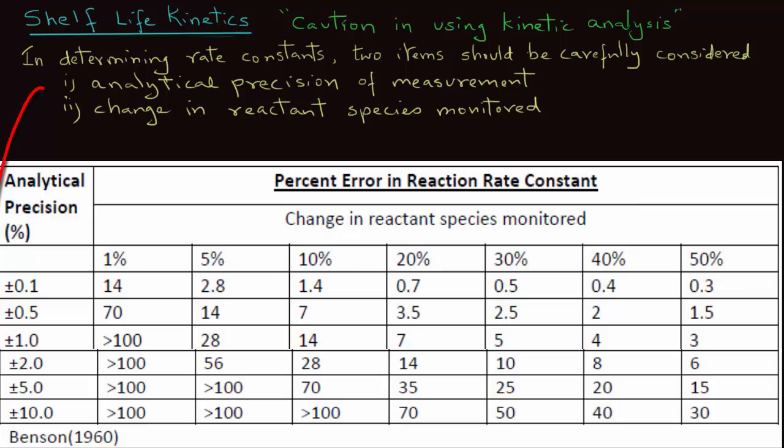So, if the analytical precision is low, then one must let more change in the reactant species occur. Otherwise, the error in estimation of rate constant will be very high. Let's look at this table.